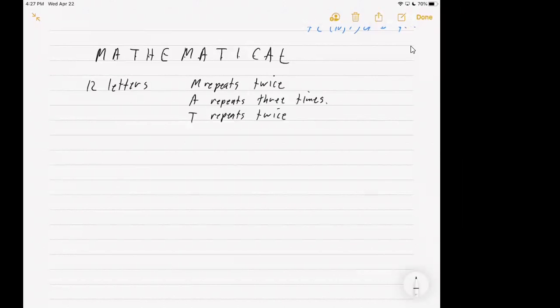So using that, we could figure out how many different unique ways we could arrange these letters. We wanted to make passwords. They could be nonsensical passwords, but if we wanted to make passwords out of those letters, keeping them all capital, there are a lot of ways to do that. Let's figure out how many passwords we could make from the word mathematical.